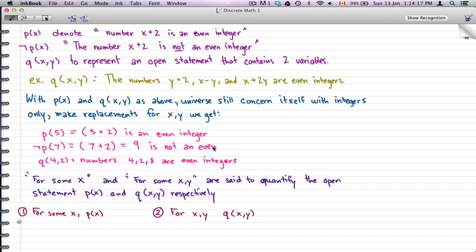And for the last one, q(4,2), we replace X by 4 and Y by 2. What we get is: well, taking Y, 2 plus 2 is 4; X minus Y, 4 minus 2 is 2; and X plus 2Y, which is 4 plus 2 times 2, is 8. And these are even integers, so using what we know there.